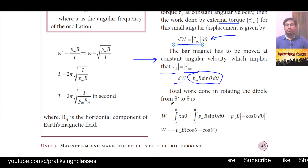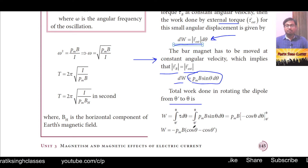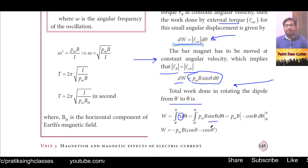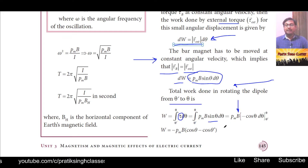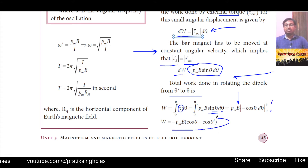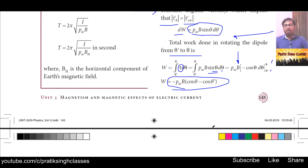The total work done in rotating the dipole from angle θ' to θ is: W = ∫ τ dθ from θ' to θ, substituting τ = p_m · B · sin θ. Since p_m and B are constants, they come outside the integral. The integration of sin θ with respect to θ is −cos θ, giving: W = p_m · B · [−cos θ] from θ' to θ, which simplifies to: W = −p_m · B · (cos θ − cos θ').